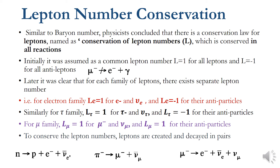Similar to baryon number conservation, experimental observations revealed a similar conservation law for leptons, called conservation of lepton number, represented by capital L, conserved in all types of interactions. Initially it was assumed that a common lepton number L = +1 applied to all leptons — electron, muon, tau particles — and L = −1 for all anti-leptons such as μ⁺ and the positron.